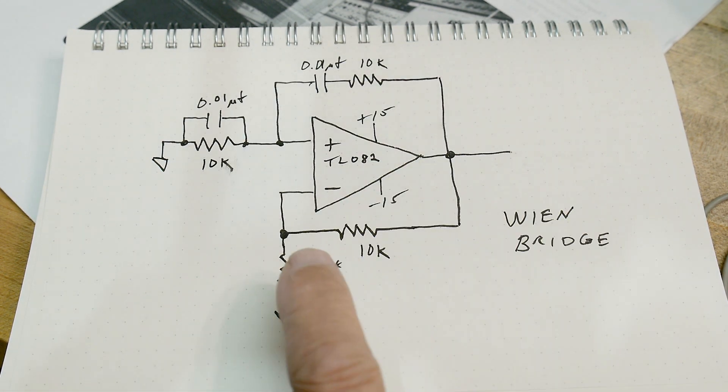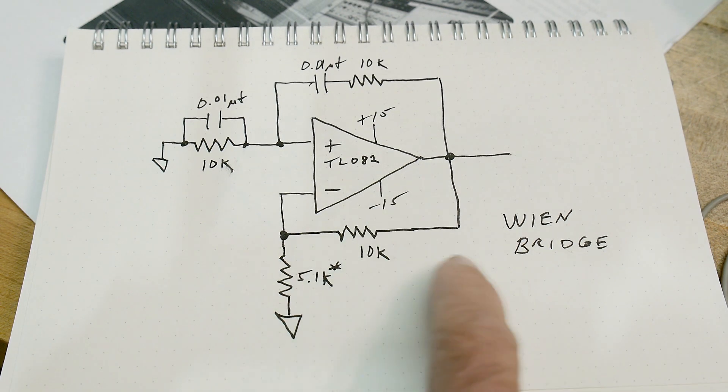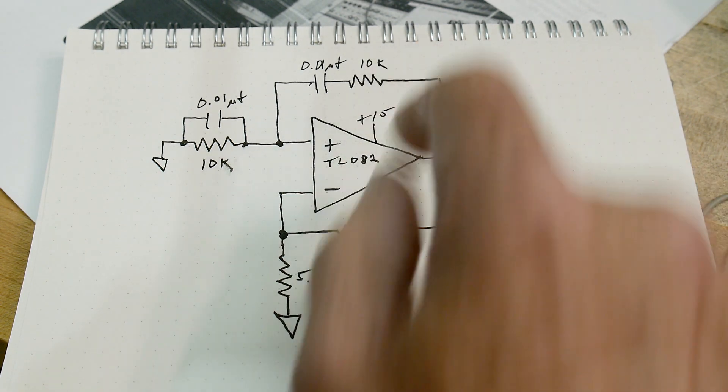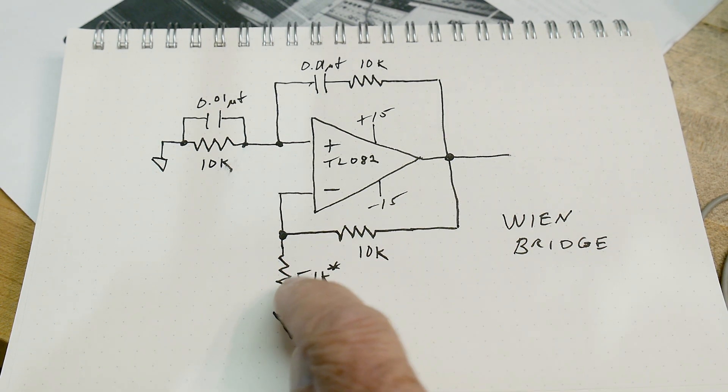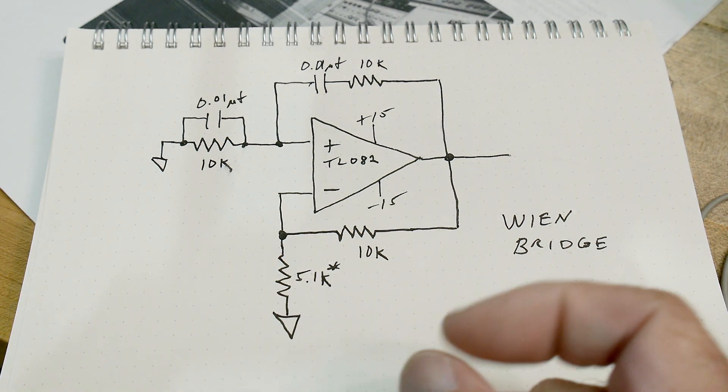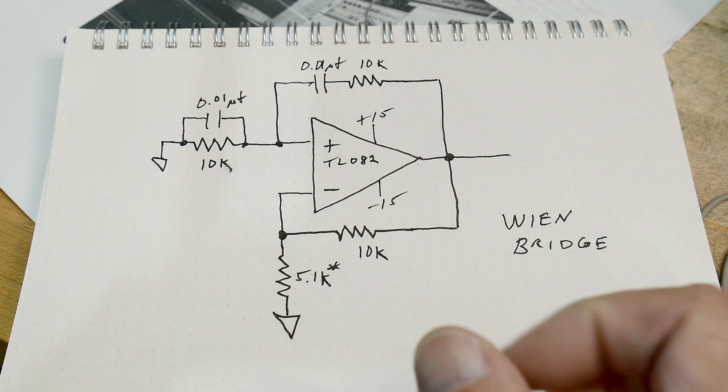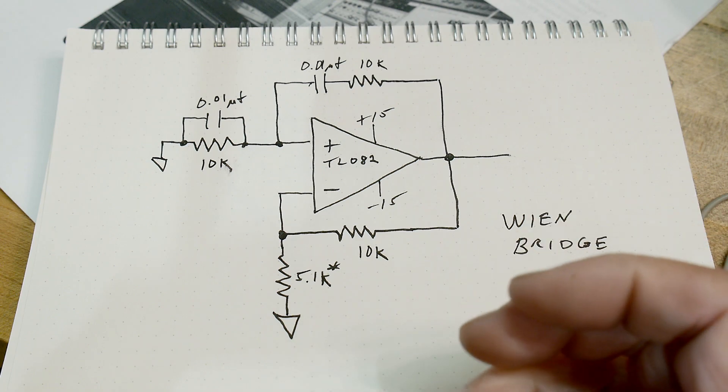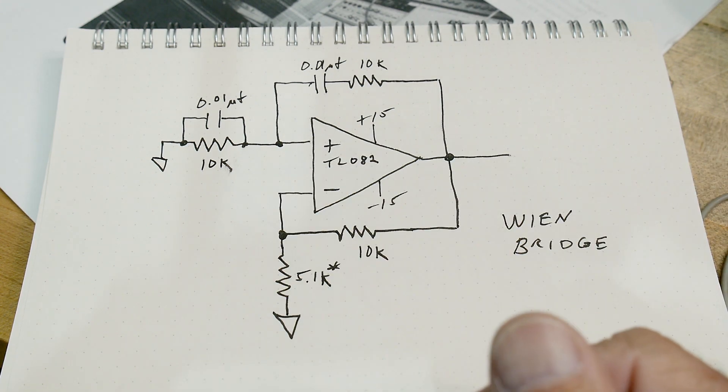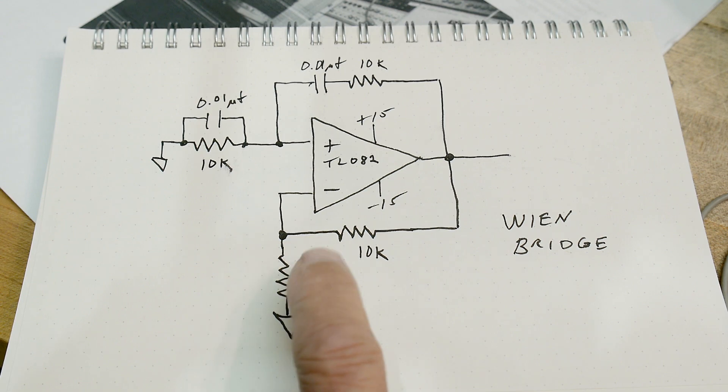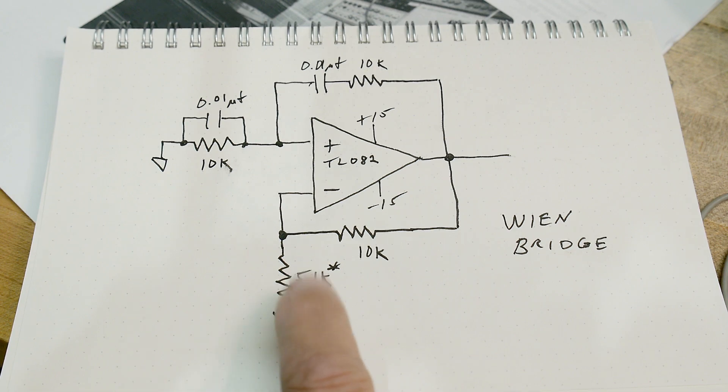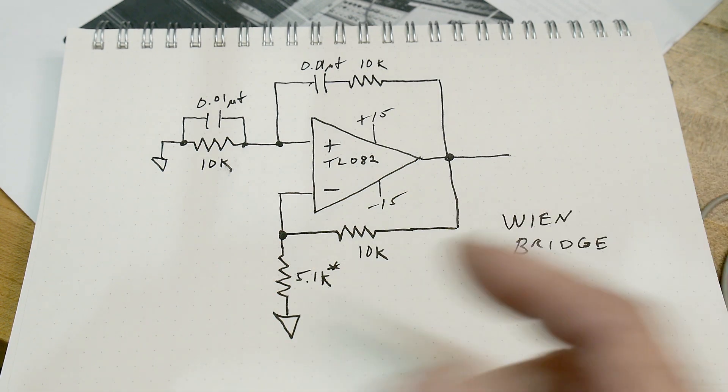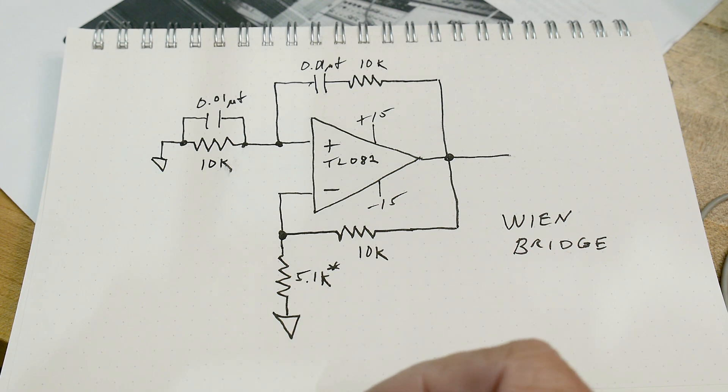Now, in order to make this thing work, this gain stage here, this resistor that adds gain on this side is very critical. It's very touchy about what this value is. And it makes the thing a little bit hard to build. So if you build one of these yourself, put a 10K pot here and adjust it until this thing works nice and then go measure your pot and see what value you ended up with. And mine happened to be around 5.1K. So yeah, so that's kind of a tip there.